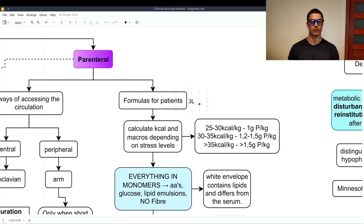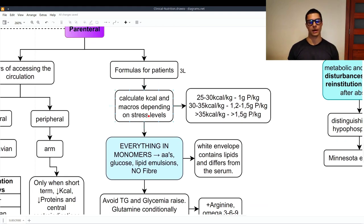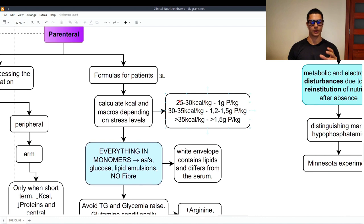Then the formulas we give to the patients are made of three liters, more or less. And we have to calculate the calories and macros depending on the stress level again. And here it is much more accurate because these are monomers, what we use here. Everything must be in monomers. So, we don't give protein. We give amino acids. We don't give carbs. We give just glucose. We don't give fat. We give lipid emulsions. And of course, no fiber, because we don't need fiber in the blood. Of course not. So, the calories and macros are depending on the stress level. The low stress level, between 25 and 30 kilocalories per kilogram, and one gram of protein per kilogram. Medium, from 30 to 35 kilocalories per kilogram, which tends to be normal, and from 1.2 to 1.5 grams of protein per kilogram. High stress levels, over 35 kilocalories per kilogram, and over 1.5 grams of proteins per kilogram of body weight.